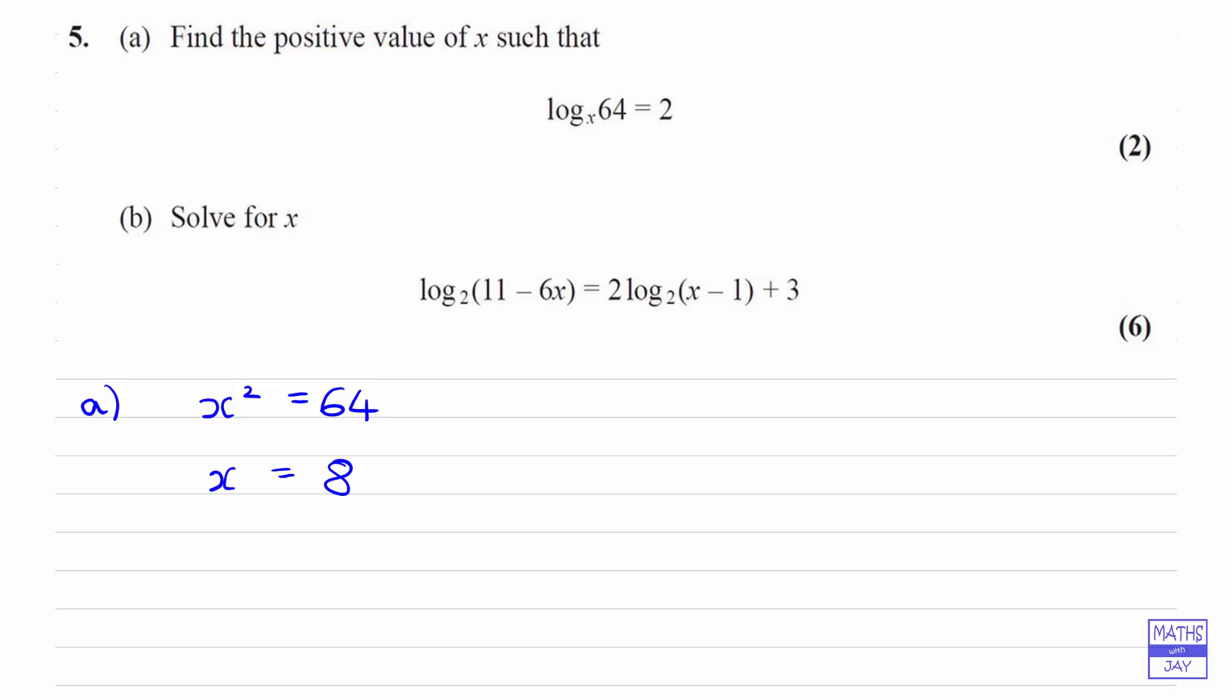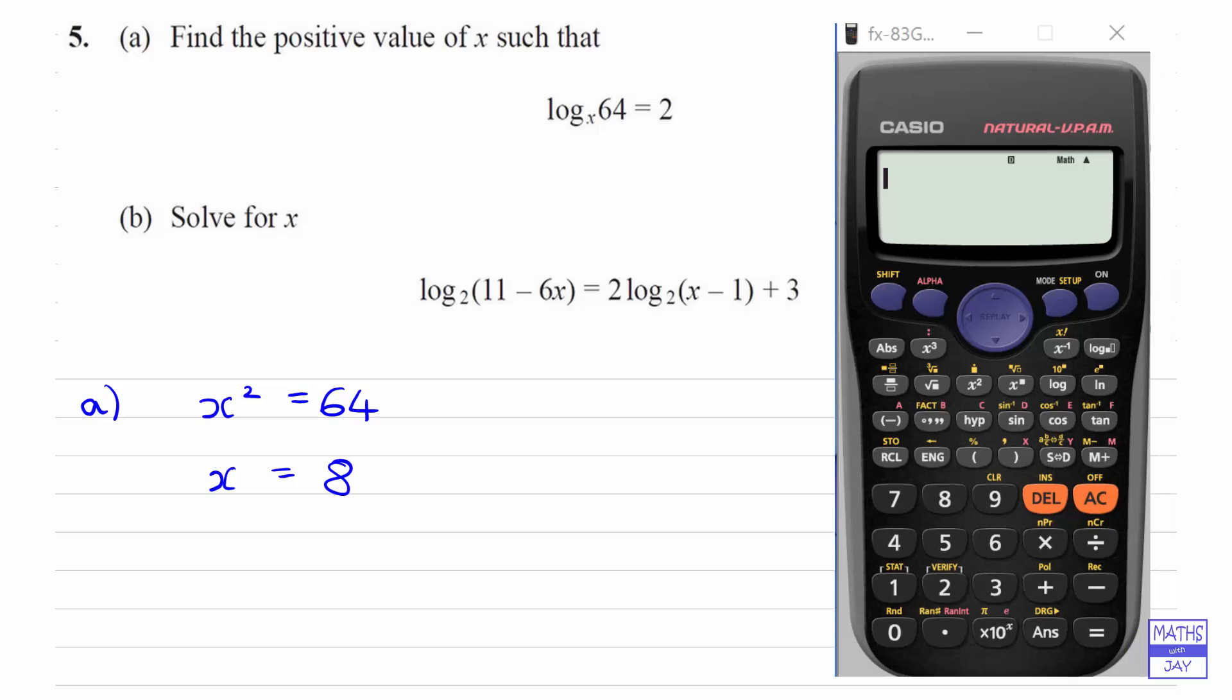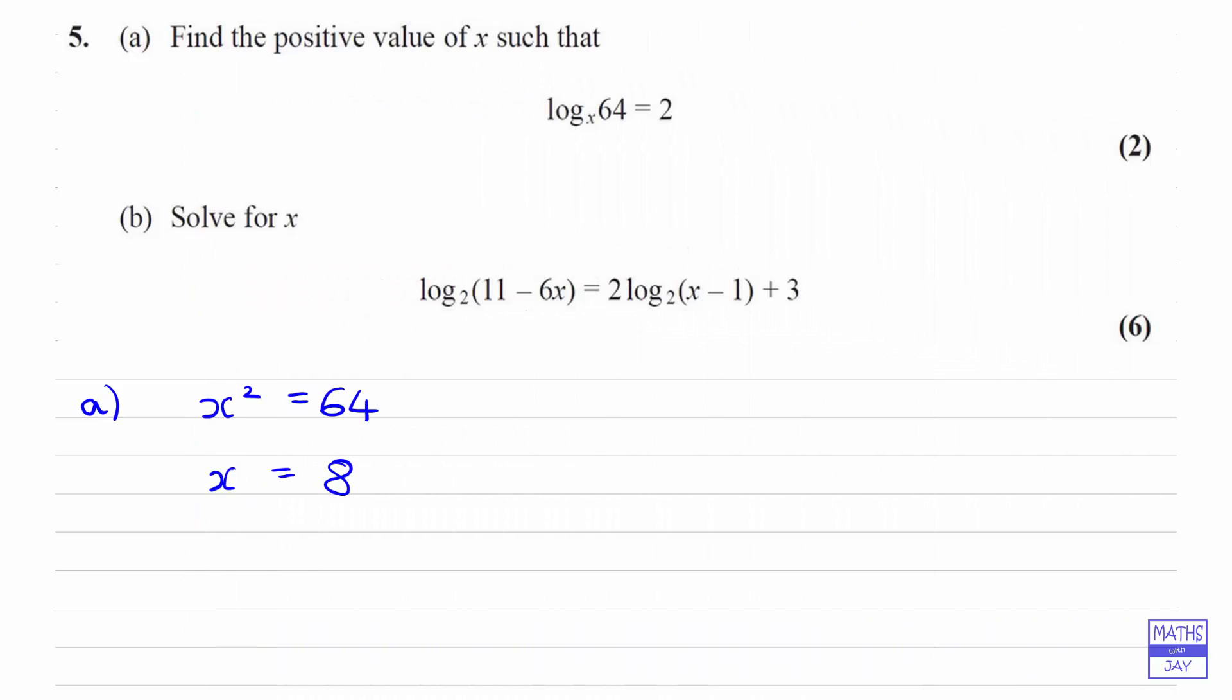And we could check that in our calculator. So we're going to use our log to any base button. And then we have discovered that x is 8, so we're putting 8 in there. And then we're going to use our right arrow button on the replay. And then we want 64. And that equals 2, so we're right. Let's put that to one side and let's look at part b.